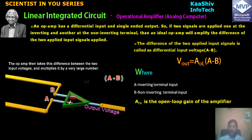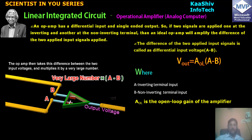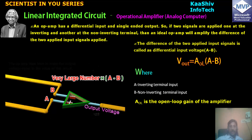Once you calculate that biggest number, the output voltage is matched and amplified. This is how we use the operational amplifier to increase the bandwidth or voltage. This is the normal operational amplifier process.